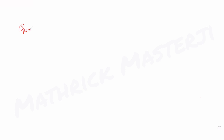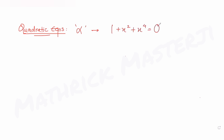Hi guys, I hope you are all doing well. Today's question is from quadratic equations. The question tells us: let alpha be a root of the equation 1 + x² + x⁴ = 0. When alpha is the root of this equation, we are asked to find the value of α^1011 + α^2022 - α^3033.